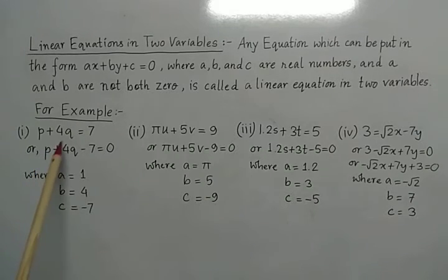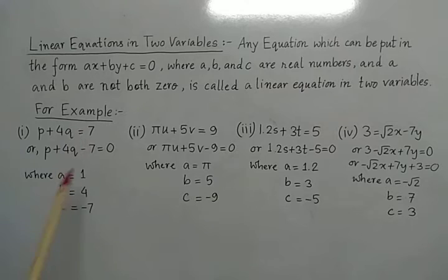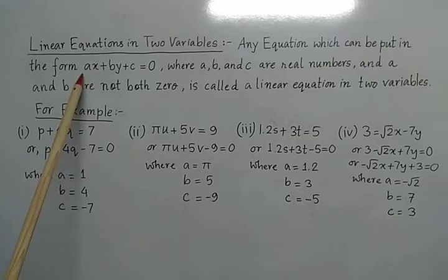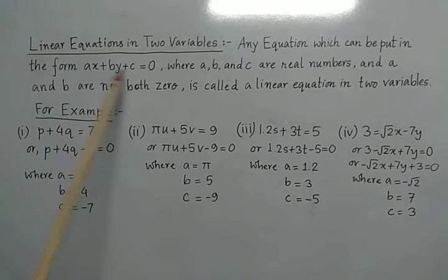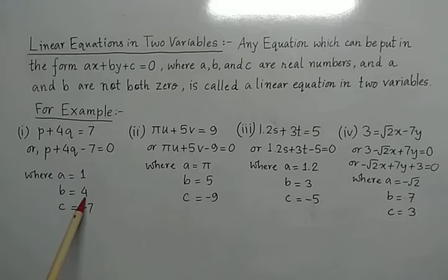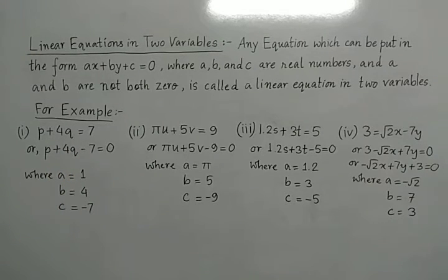What we have done is transpose this 7 onto the left hand side. After transposing, the sign will change. Now if you compare this with the standard form, we get a equals to 1 — since nothing is written, it is 1 — b equals to 4, and c equals to minus 7.